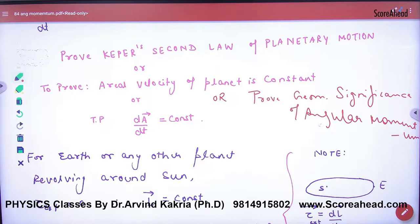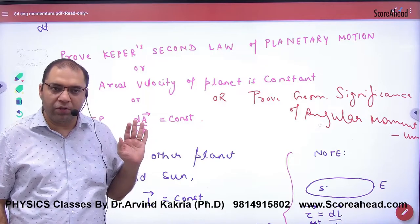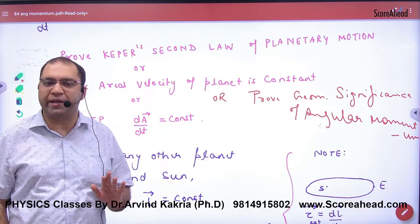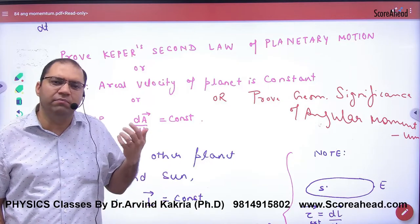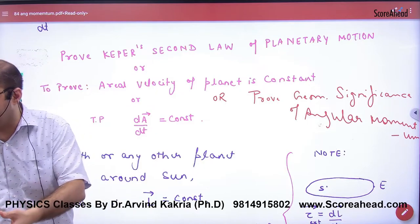How do you think, Rani? Where is the statement that he wants to prove aerial velocity constant? He wants to prove aerial velocity of a planet is constant.